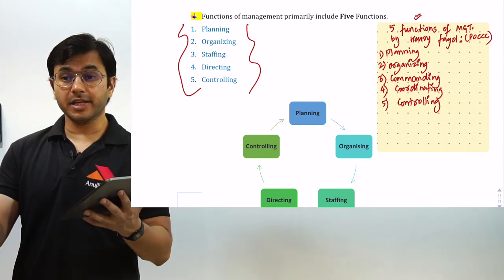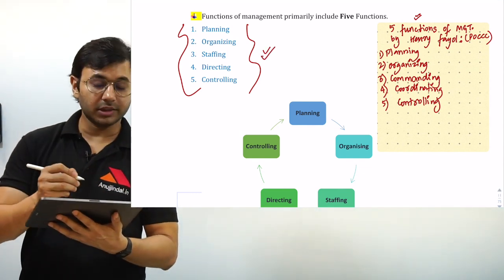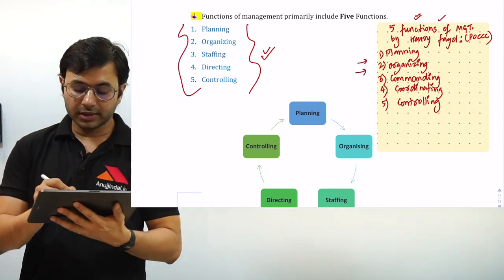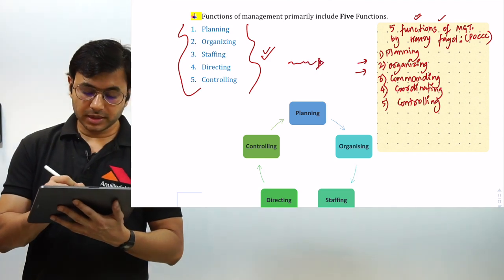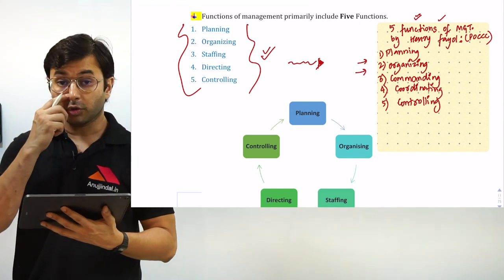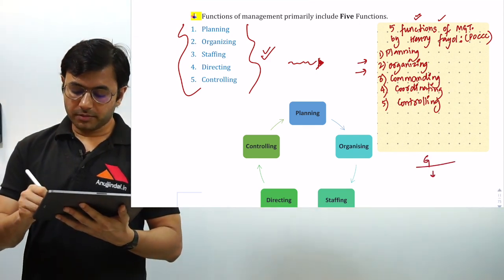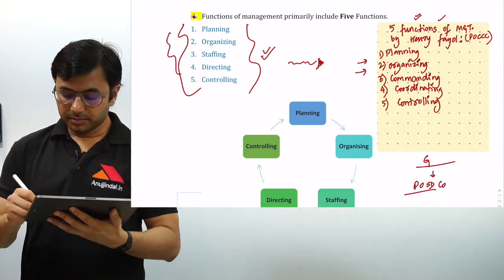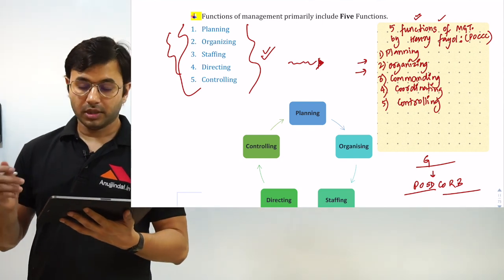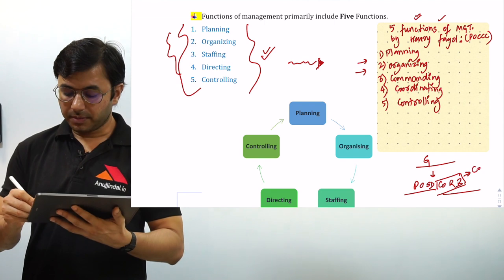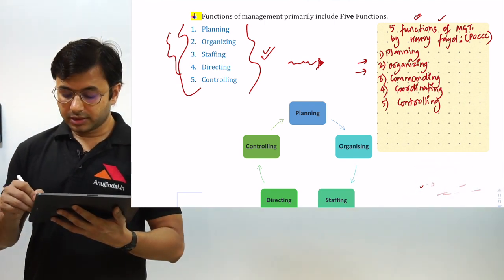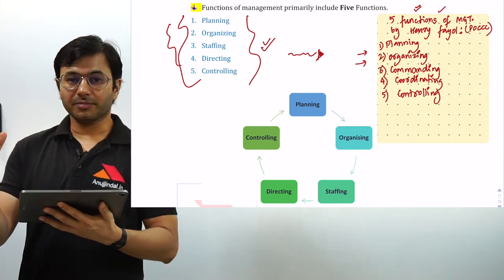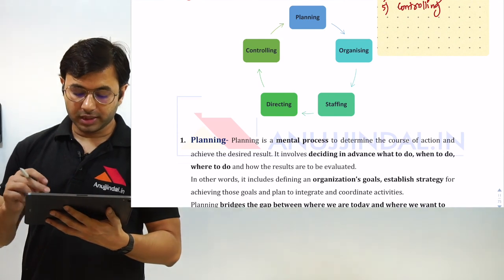The first framework is planning, organizing, staffing, directing, and controlling. The second is by Henry Fayol, who says it is planning, organizing, commanding, coordinating, and controlling — which is POCCC. The third is by Gulick, who breaks down controlling further into planning, organizing, staffing, directing, coordinating, reporting, and budgeting — which is POSTCORB. So coordinating, reporting, and budgeting were created by breaking down controlling further. You need to create that structure in your mind before we move forward.